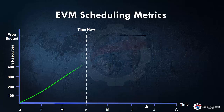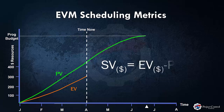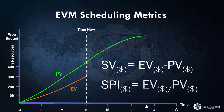Let me show you what I mean. This is an example of a project which is obviously behind schedule because we are earning less than what we planned to earn. Schedule variance is the difference between earned value and plan value. Because earned value is in currency and plan value is in currency, the schedule variance — the amount of variance from your plan — is also in terms of dollars and not units of time. You cannot really use cost or dollars to speak about time units or the amount of delays in terms of duration.